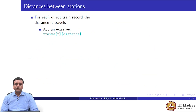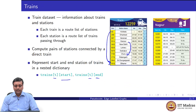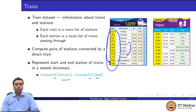Here is one natural computation we might want to do with our train dataset. Suppose we need to know not just whether there is a direct train from A to B, but also how much distance it travels. This information is on the train card, since there is a distance column — for instance, it is 1,916 kilometers from Kolkata to Bikaner. So we might want to know the distance between every pair of cities directly connected by a train.